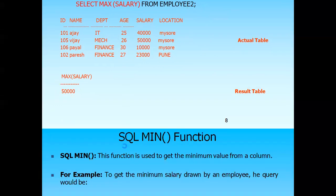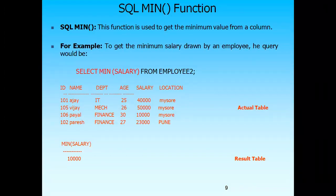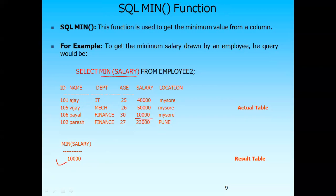Similarly, the MIN function retrieves the minimum salary from the table. The query is: SELECT MIN(salary) FROM employee. If 10,000 is the minimum salary, the result will be 10,000. By default, the query gives the result column the name of the function — MIN(salary) — but you can change this using aliasing. These derived values are not stored in the table; they are calculated temporarily.